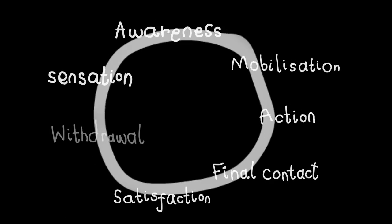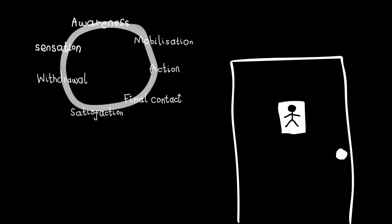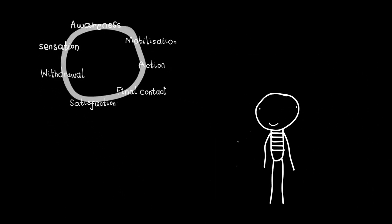Stage seven is withdrawal. This is letting go to allow for a new sensation to arise. Another Gestalt cycle.